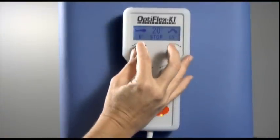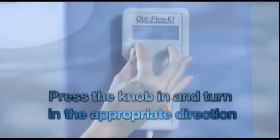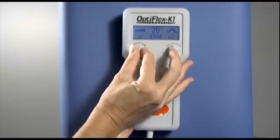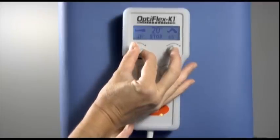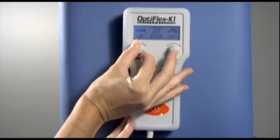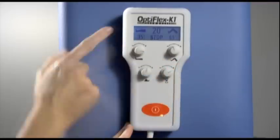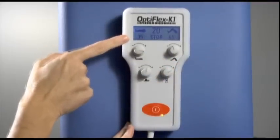To adjust the extension limit to your prescribed or desired limits, use the extension knob symbolized by the picture of a straight leg. Push the extension knob in and turn in the appropriate direction. Note on the hand control that the extension setting is on the left side of the display.